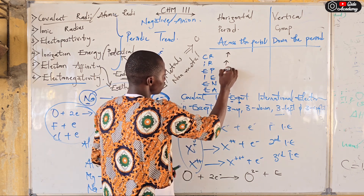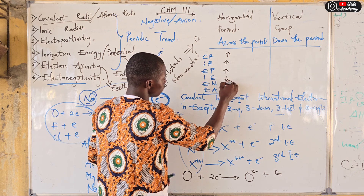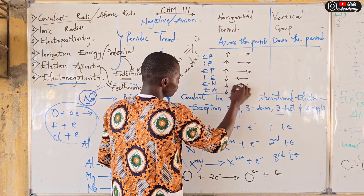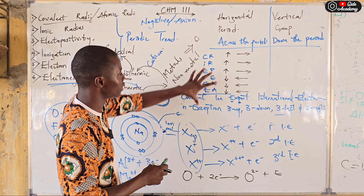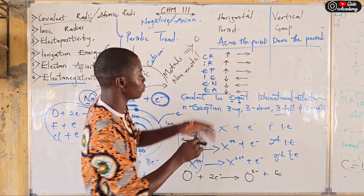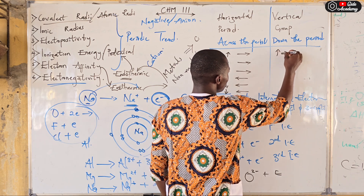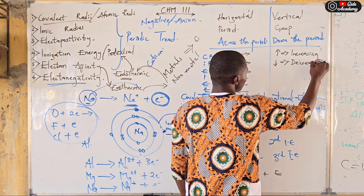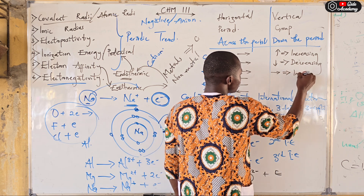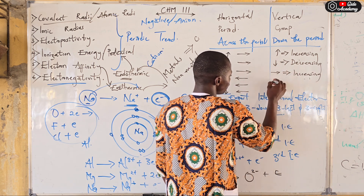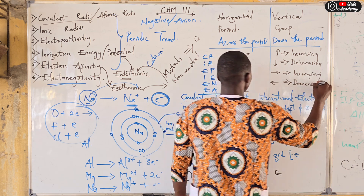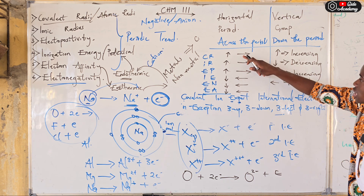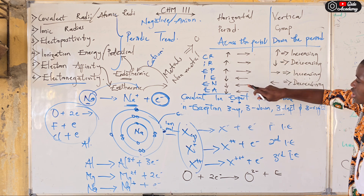Three of them face up and three face down, and we have three going right and three going left. If something is going up, it simply means it is increasing. If something is going down, it simply means it is decreasing. If something is going to the right, it simply means it is increasing. And if something is going to the left, it simply means it is decreasing. So we have: increasing, increasing, increasing — then decreasing, decreasing — and this one here is decreasing.